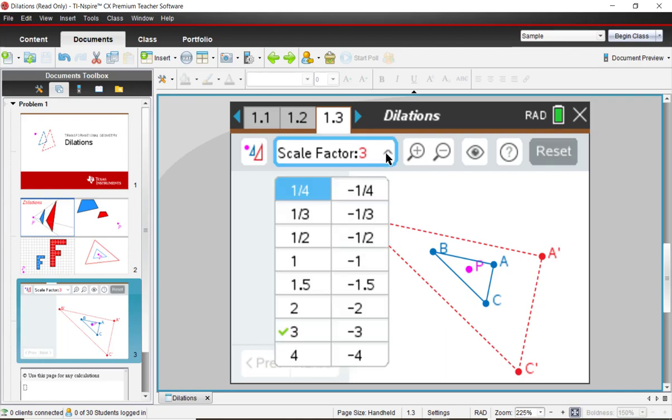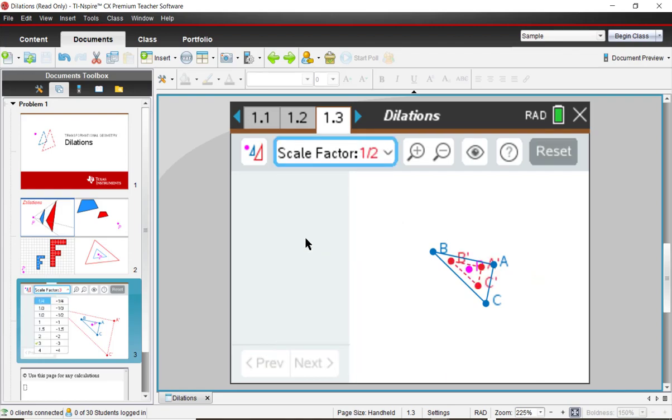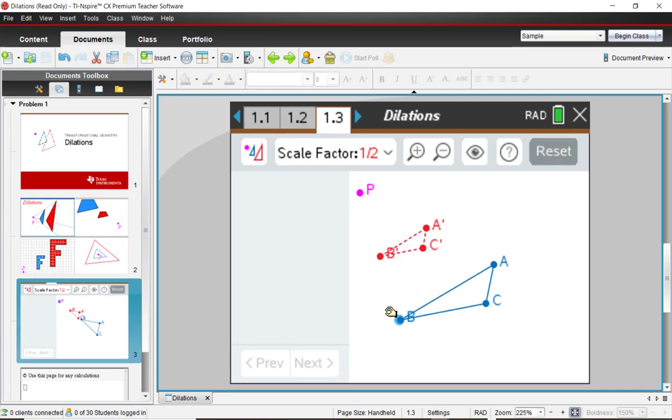I'll change the scale factor to a half. So I'll click on a half. And let me pull point P out here. And notice that used to be that the pre-image was inside and the image was outside in this order here. But since the scale factor is a half, it seems to be a little bit different.